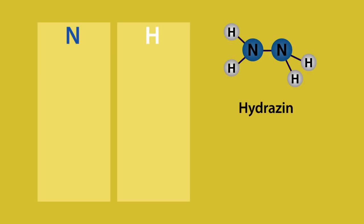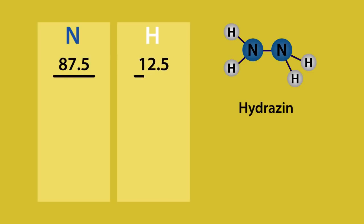Then, under each element, we put the percentage composition by mass. So that's 87.5% for nitrogen and 12.5% for hydrogen. We then divide these percentages by the relative atomic mass of each element — so that's 14 for nitrogen and 1 for hydrogen.